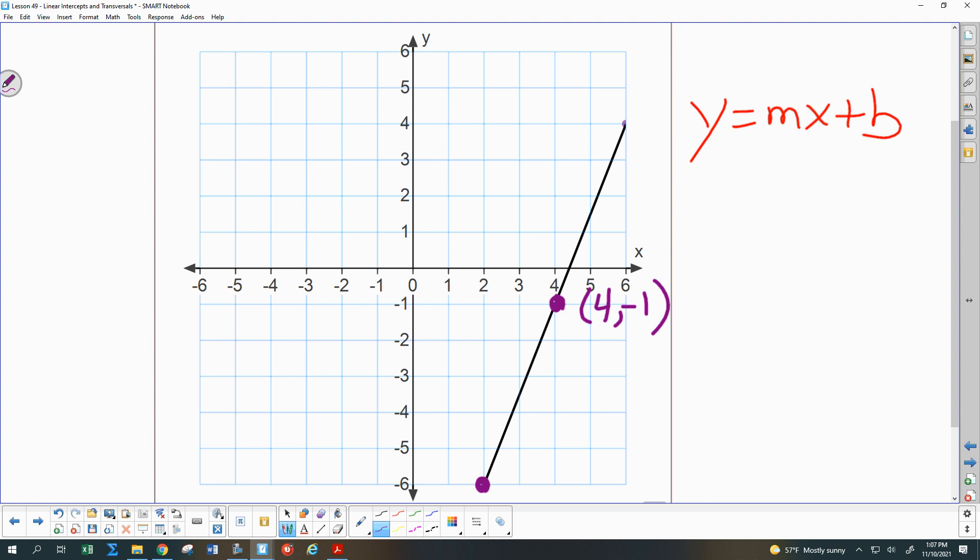And I need m and I need b. Well, I wonder if I can't find b, maybe I can come up with m. Does anybody have an idea of how I can come up with the slope here? And I'll set these coordinates on here, too. That one was 2, negative 6. Evelyn.